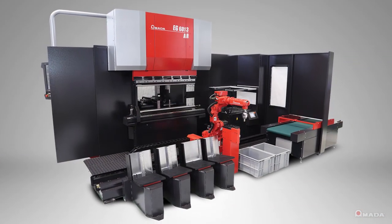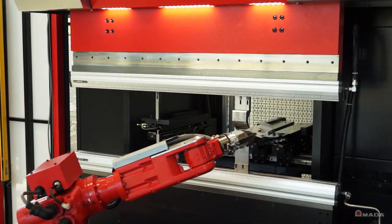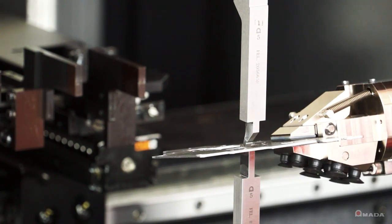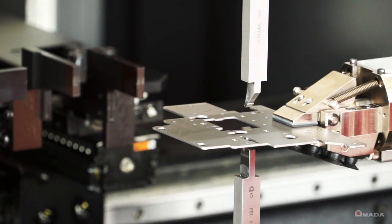Introducing the EGAR, an automated robotic bending system from Amada. The EGAR was engineered specifically to bend small, complex parts.